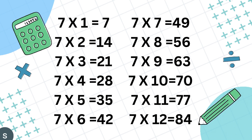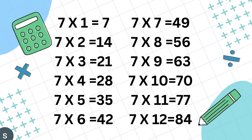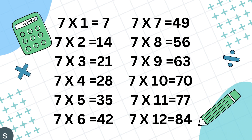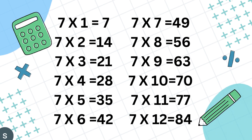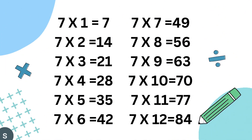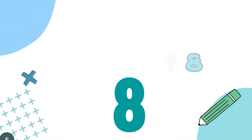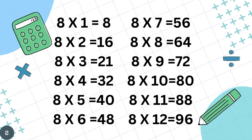7 8's are 56, 7 9's are 63, 7 10's are 70, 7 11's are 77, 7 12's are 84.